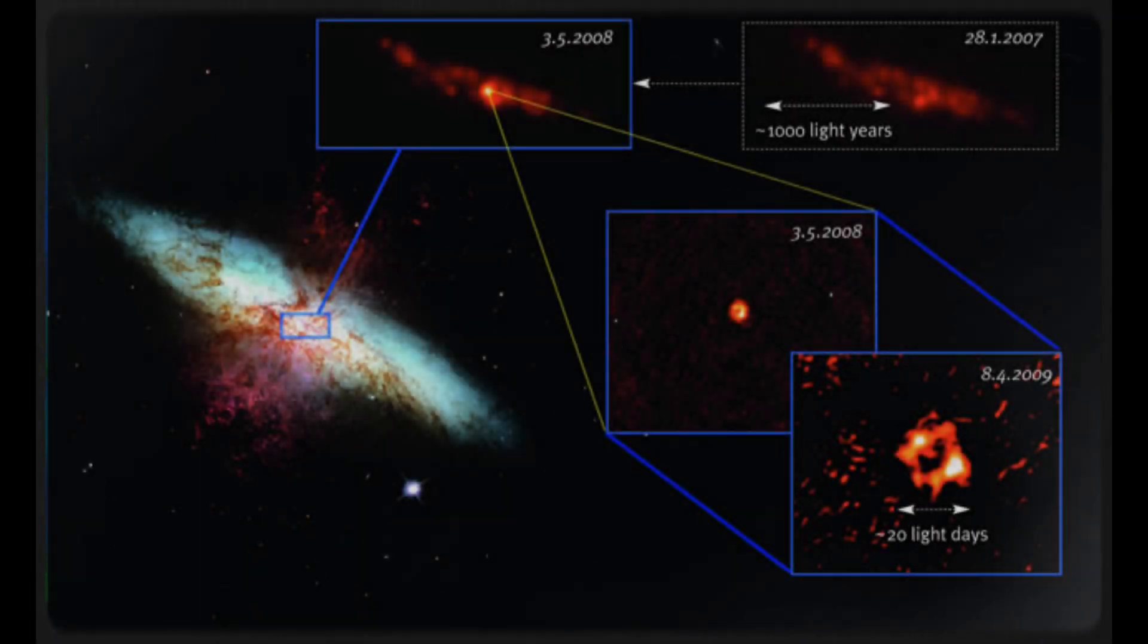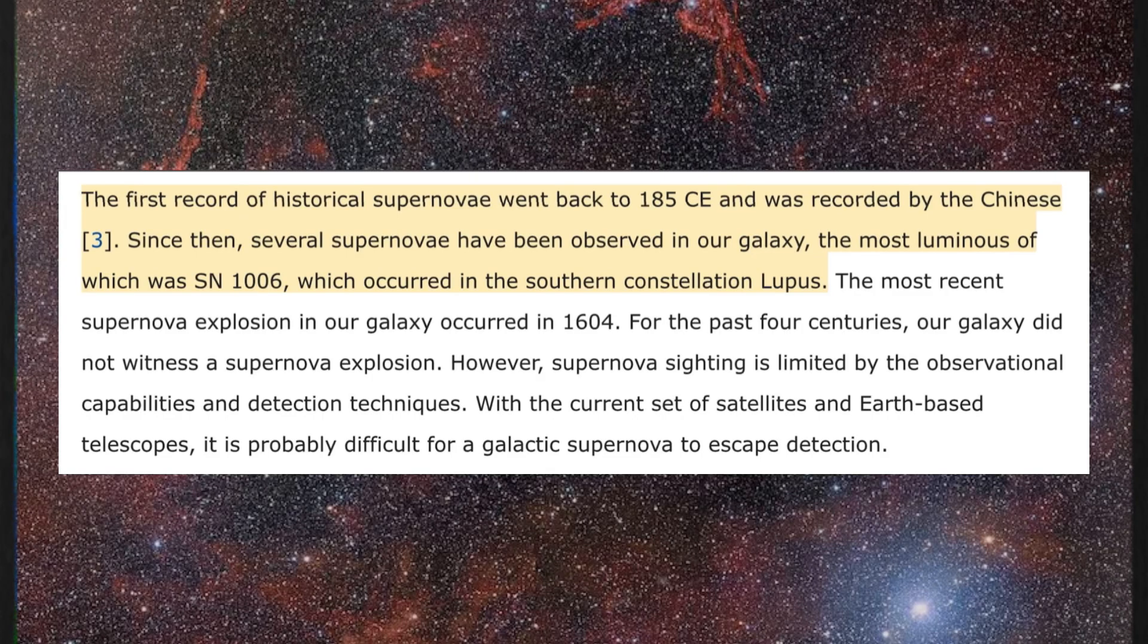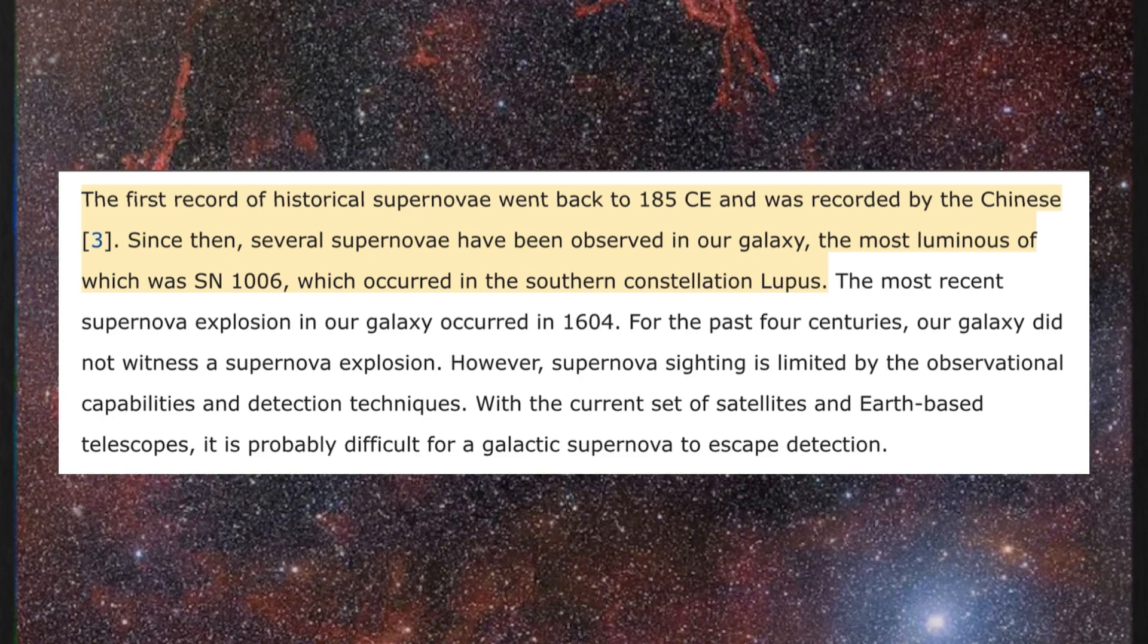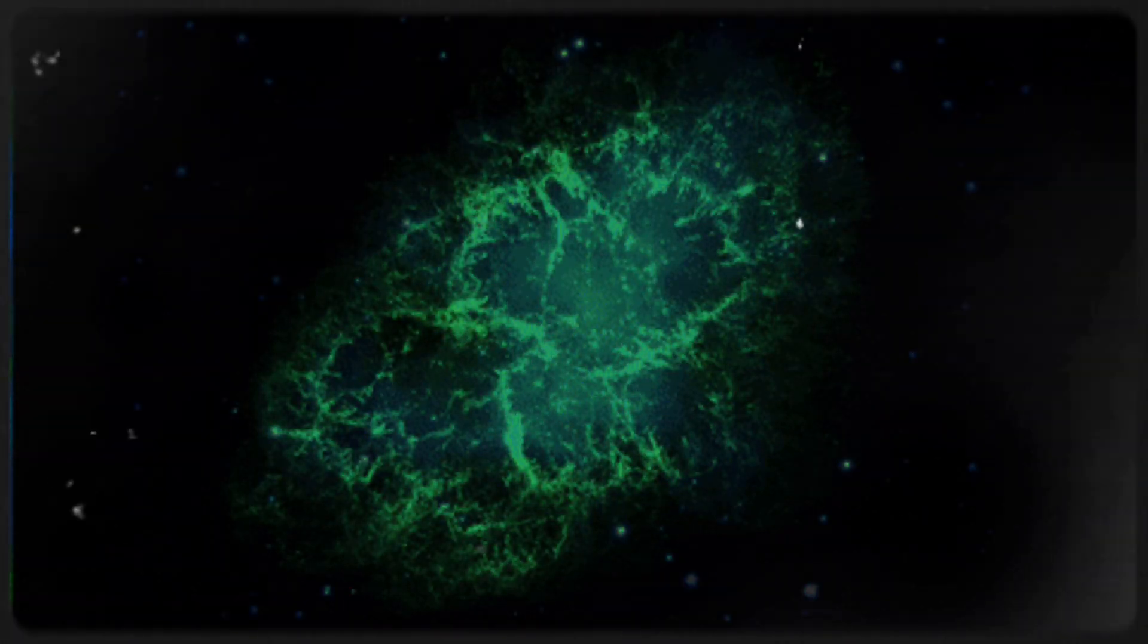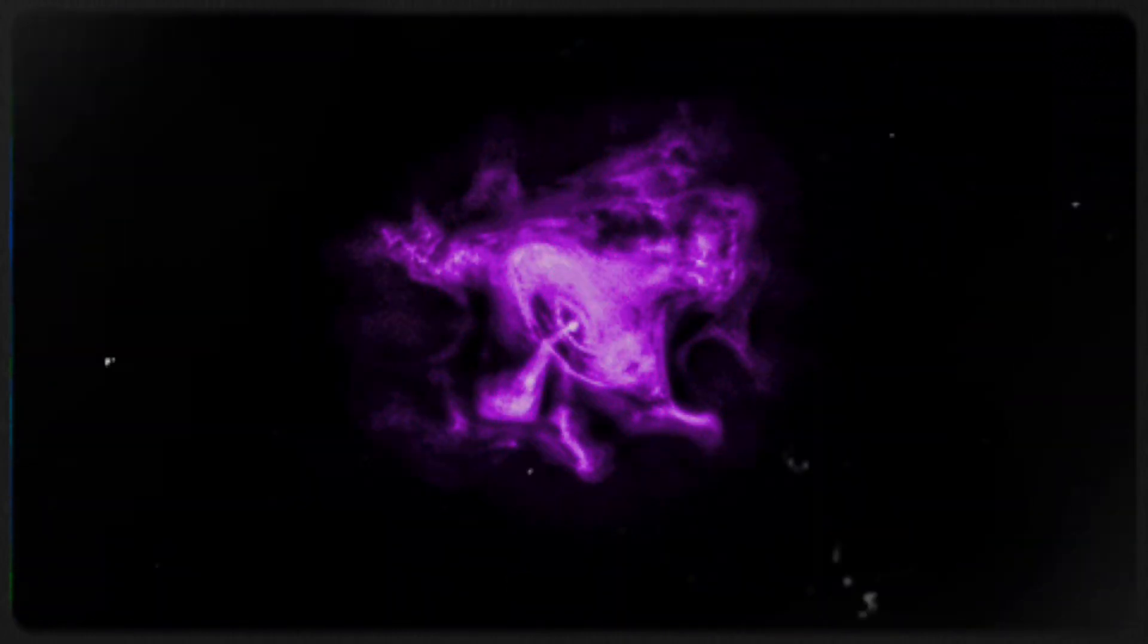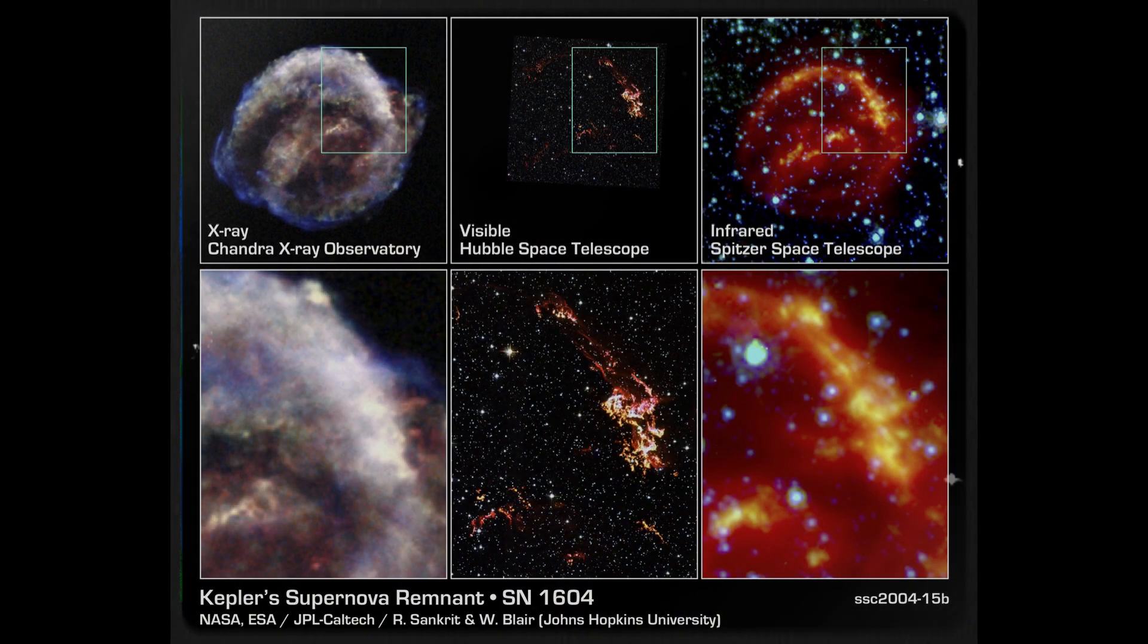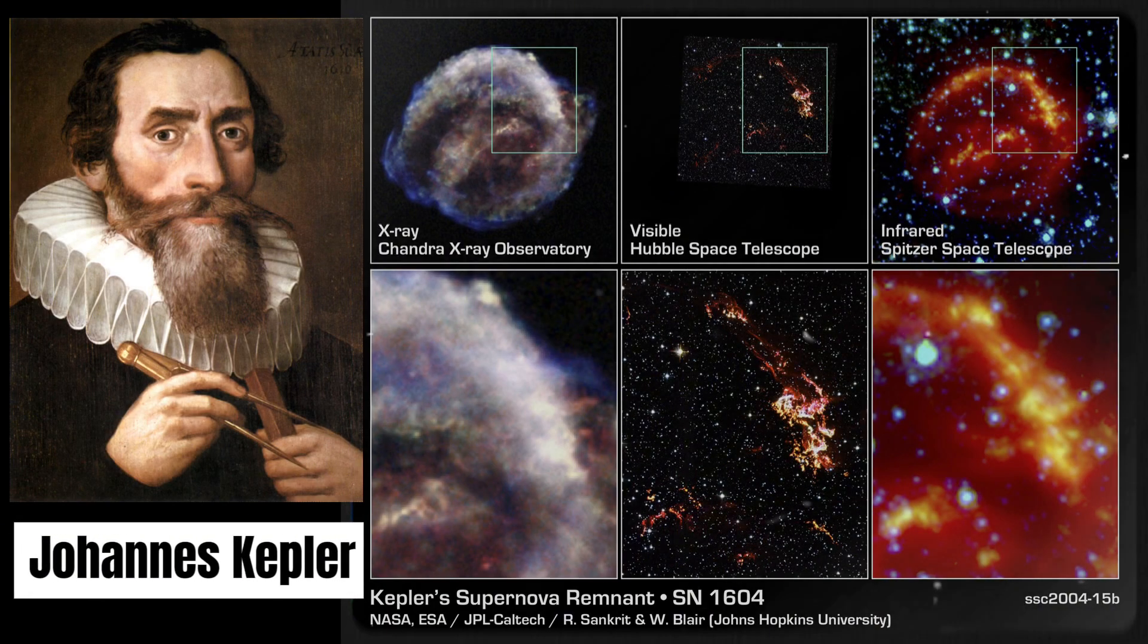Throughout history, observing supernovae has provided critical insights into stellar death. The earliest known record of a supernova dates back to 185 C.E., where a bright star was observed for 8 months before vanishing. Other notable supernovae include SN1054, which created the Crab Nebula and was visible during the day for 23 days. The most recent supernova in the Milky Way, SN1604, was studied in detail by the famous astronomer Johannes Kepler.